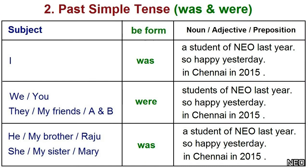In past simple tense, we use was and were. Examples: I was a student last year. We were students last year. He was a student last year.